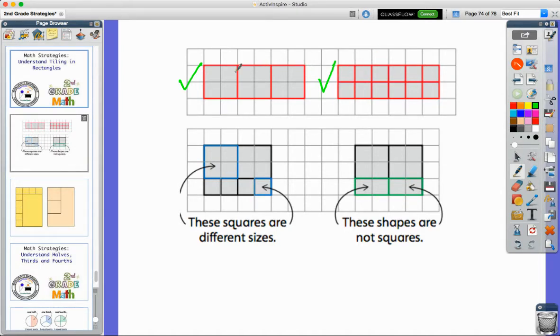This rectangle at the top, they broke into three squares. This rectangle over here, they broke into 12 smaller squares. You'll see that all the pieces look exactly the same.